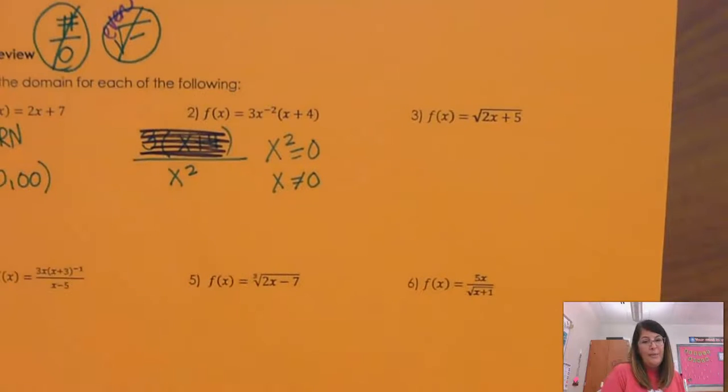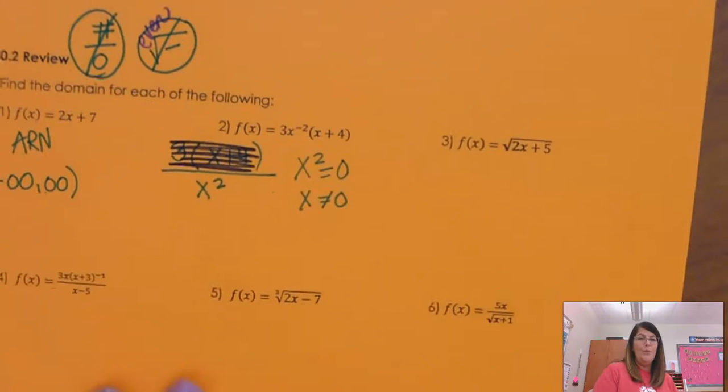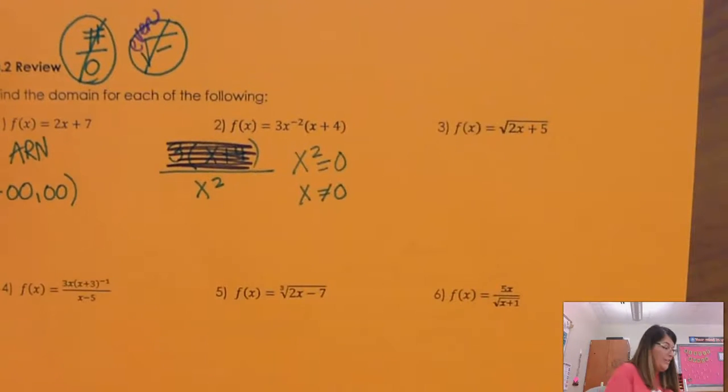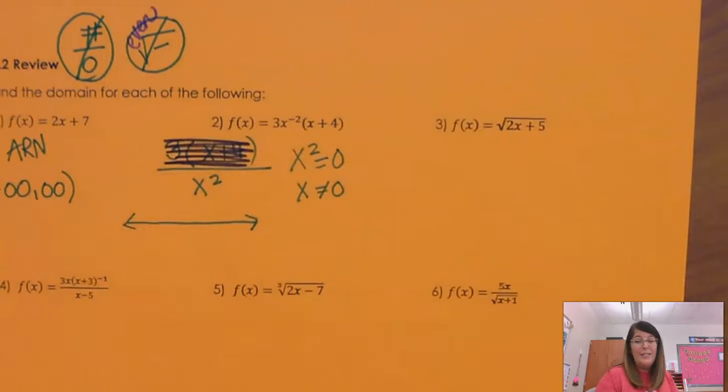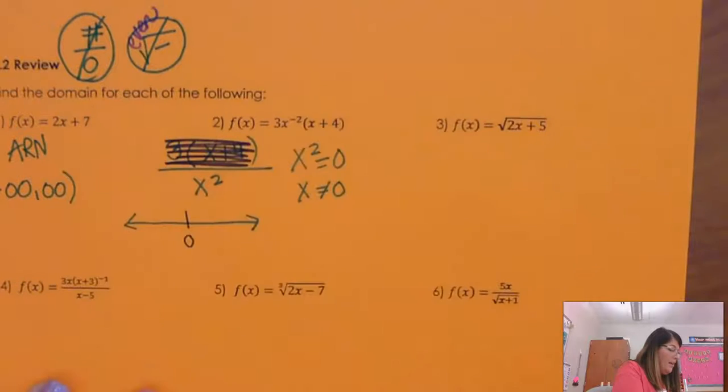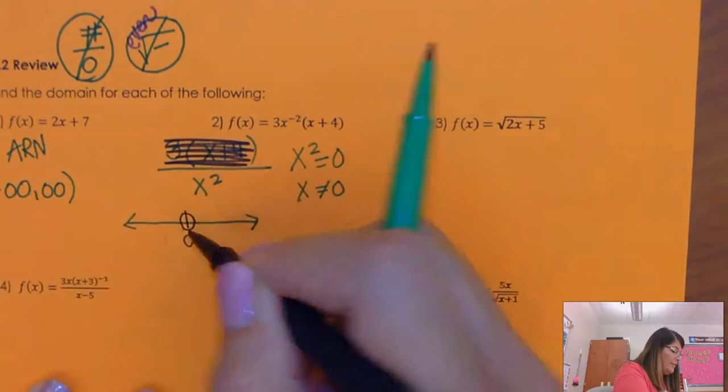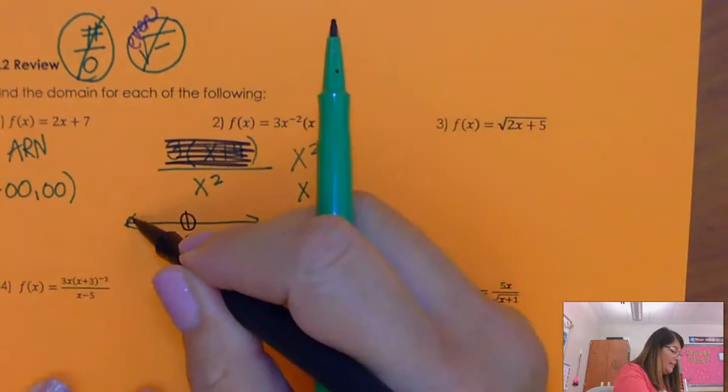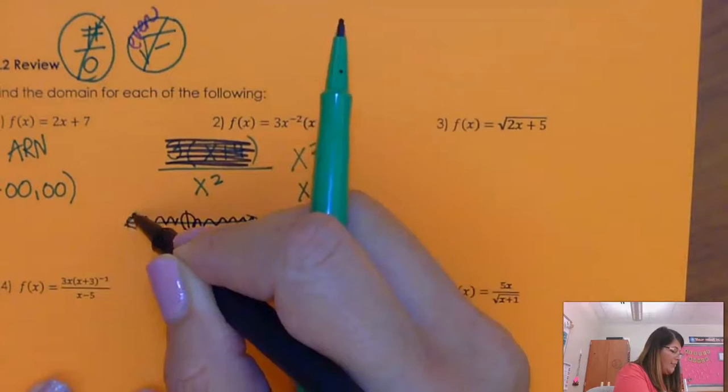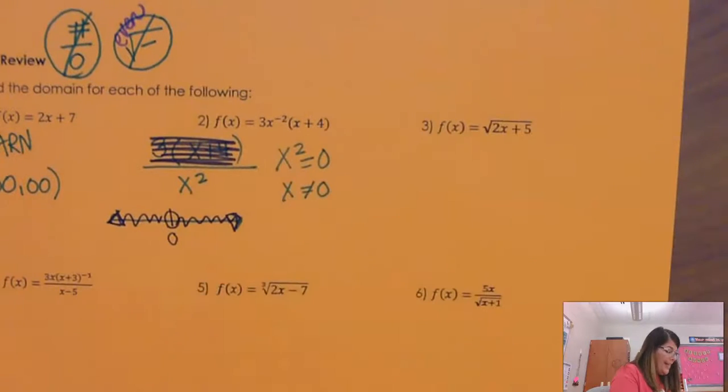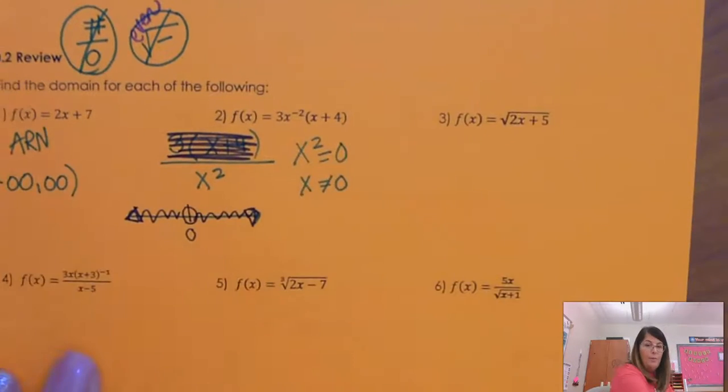So now understanding what the domain is one issue and then being able to write it in set notation is another. The way I write it in set notation is first I put it on a number line. So at the number 0, there is a gaping hole. It cannot be 0. It can be before 0 forever and after 0 forever, but it cannot be 0.